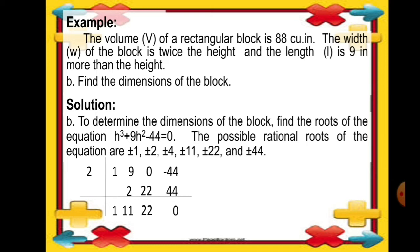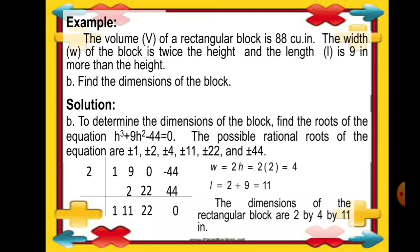To determine the length and width, we substitute h equals 2. The width is twice the height: 2 times 2 equals 4. The length is 9 inches more than the height: 2 plus 9 equals 11. The dimensions of the rectangular block are 2 by 4 by 11 inches.